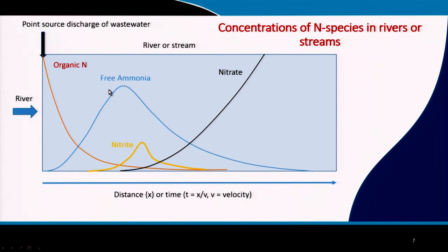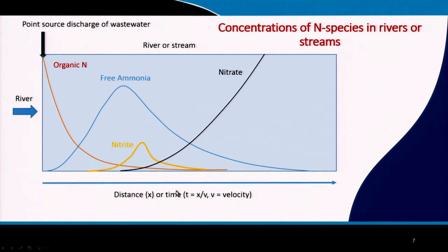The peak in ammonia is indicative of the rapid release of free ammonia, which is then picked up by nitrifying bacteria — relatively slow growers. This nitrite is converted to nitrate, the most oxidized form of nitrogen. The x-axis can be read as distance from the point of discharge, and if the flow velocity of water is known, time and distance can be interconverted.